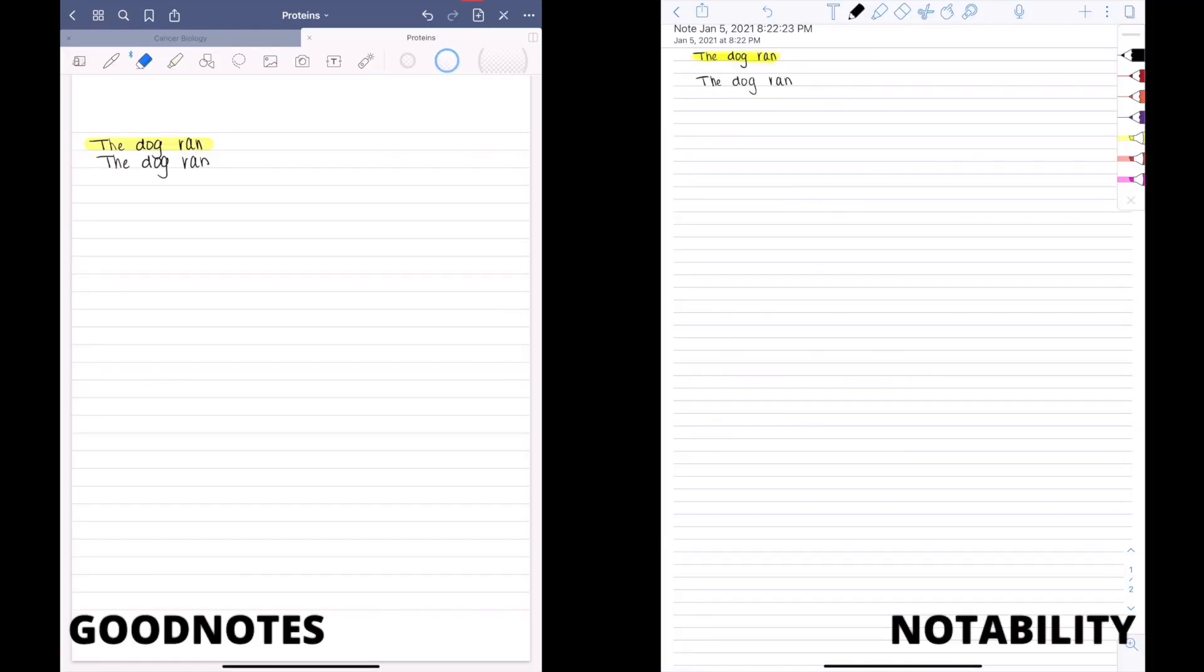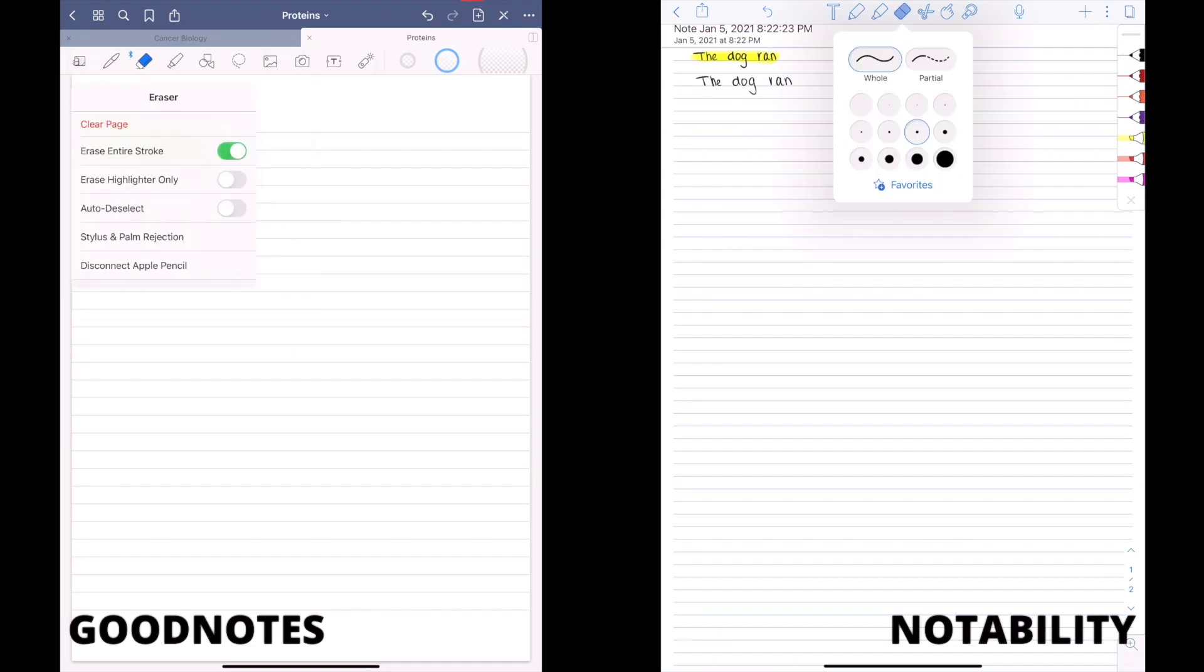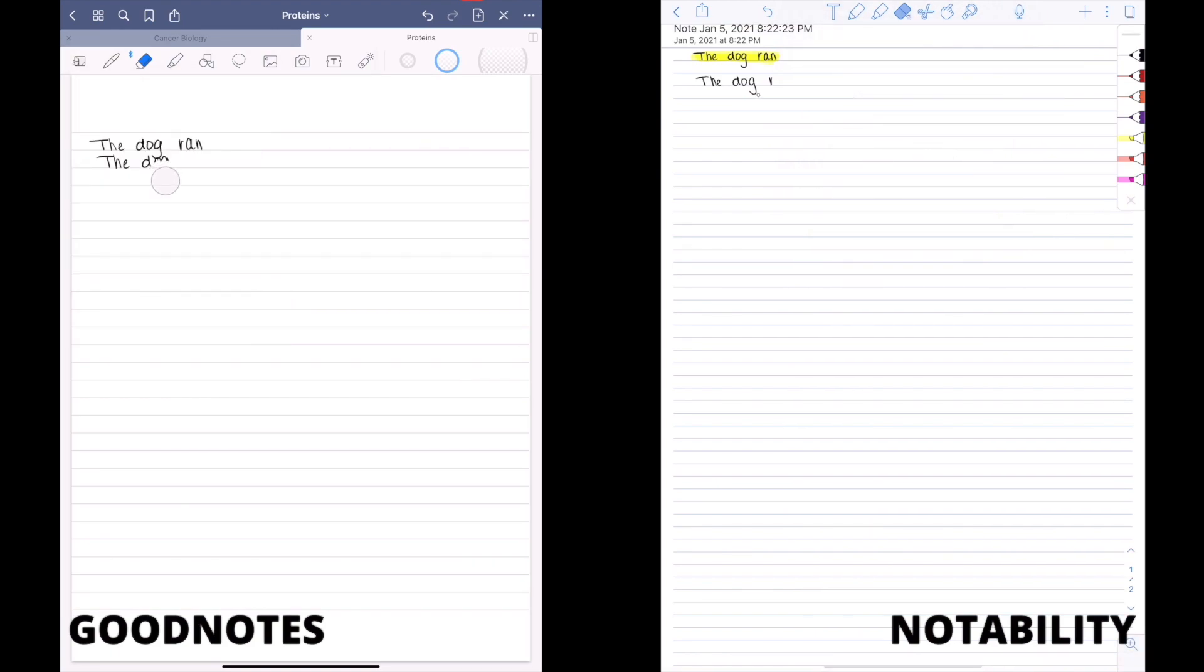Both GoodNotes and Notability have the option for erasing your entire stroke or only erasing partial. Both apps also give you the option to change the size of your eraser, which is really useful. One thing that is exclusive to GoodNotes is the option to erase highlighter only. I think this is really useful, especially if you are the type of person that likes to highlight and go over your notes multiple times.